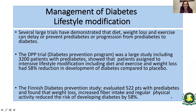Lifestyle modification with diet and exercise is the most important part of diabetes management. Several large trials have demonstrated that diet, weight loss, and exercise can delay or prevent progression from pre-diabetes to diabetes. The DPP trial, including 3,200 patients with pre-diabetes, showed that intensive lifestyle modification — including diet and weight loss — produced a 58% reduction in development of diabetes compared to placebo. The Finnish Diabetes Prevention Study, involving 522 patients, found that weight loss, increased fiber intake, and physical activity reduced the risk of developing diabetes by 58%.